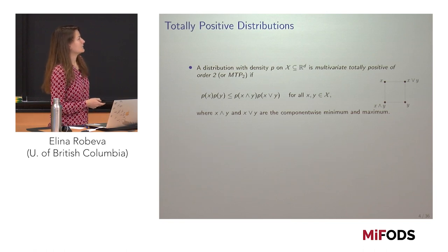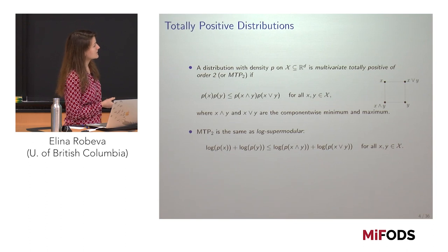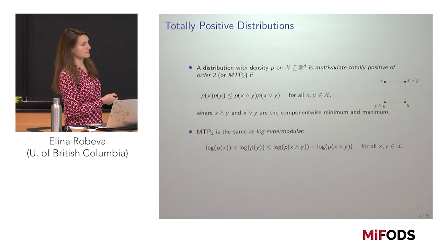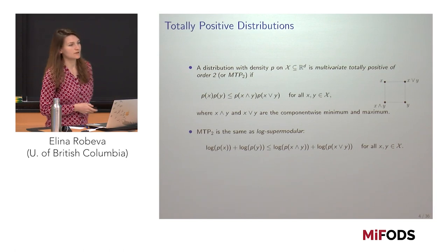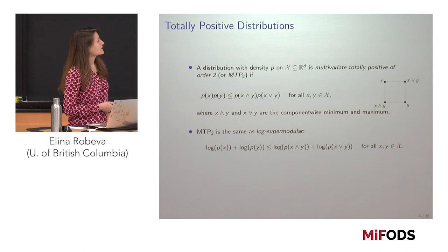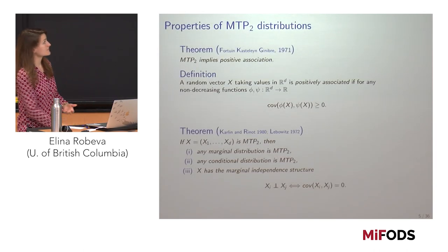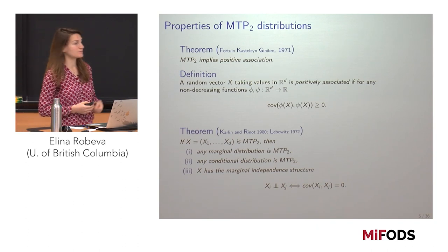If P is positive and you take logs, then log P is supermodular — it satisfies these linear constraints. So it's the same thing, but with the log taken. So why are we studying this?